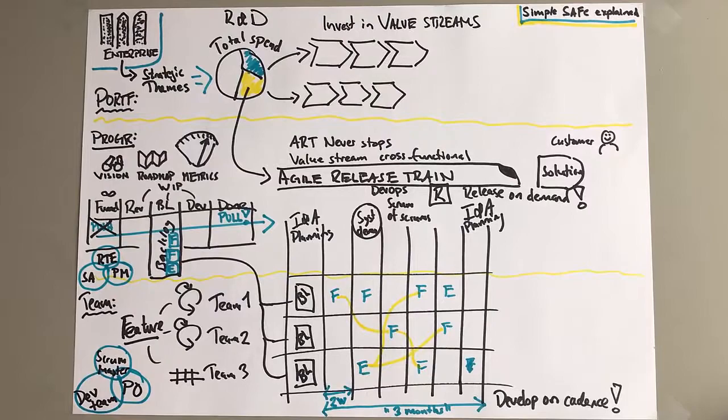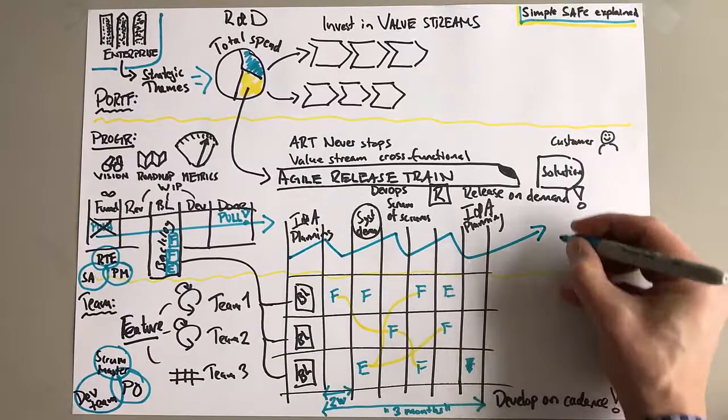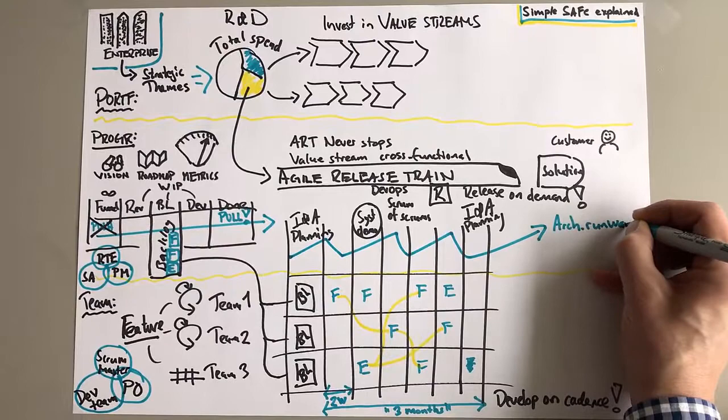Just as on the team level you have the same trinity. You have a Scrum Master, a Product Owner, and the development team taking responsibility for the architecture there. So we have these trinities. We also have it on the portfolio level, although I'm not getting into that one right now.